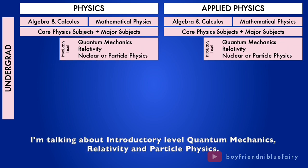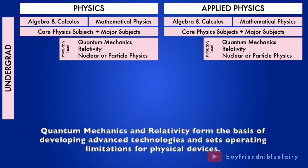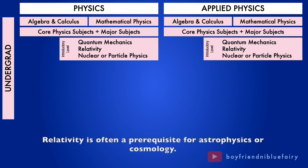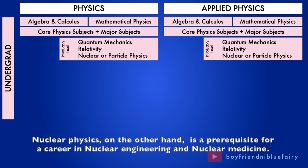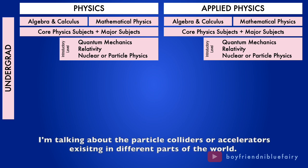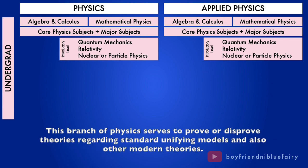I'm talking about introductory level quantum mechanics, relativity, and particle physics. Quantum mechanics and relativity form the basis of developing advanced technologies and sets operating limitations for physical devices. Quantum mechanics involves quantization of energy and waving of matter at a particular scale or system. Relativity is often a prerequisite for astrophysics or cosmology. Nuclear physics, on the other hand, is a prerequisite for a career in nuclear engineering and nuclear medicine. Particle physics has something to do with one of the history's most expensive experiments. I'm talking about the particle colliders or accelerators existing in different parts of the world.